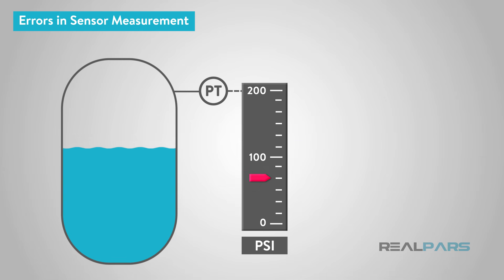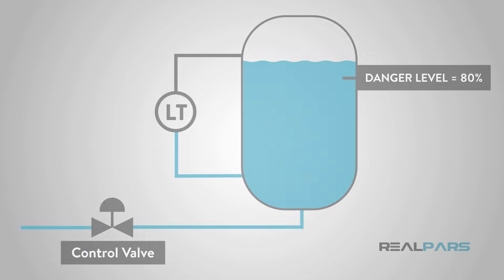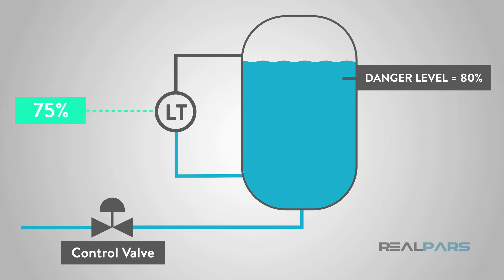Third, error in sensor measurement may occur because of mechanical wear or damage. Usually, this type of error will require repair or replacement of the device. Errors are not desirable since the control system will not have accurate data from which to make control decisions, such as adjusting the output of a control valve, or setting the speed of a feed pump.